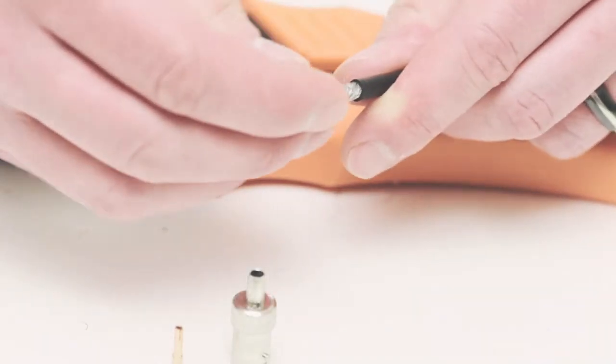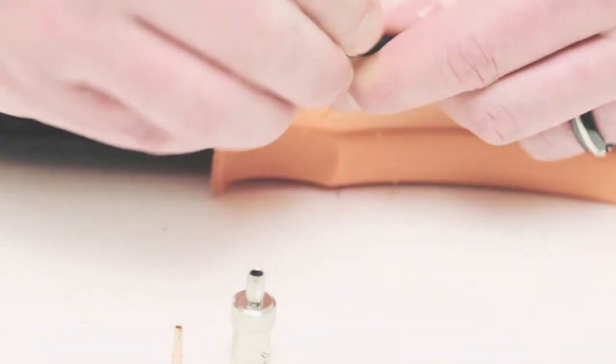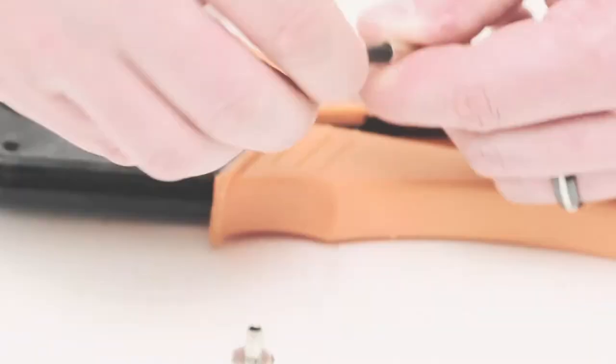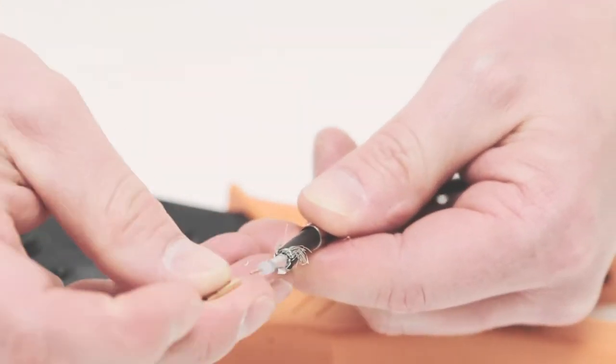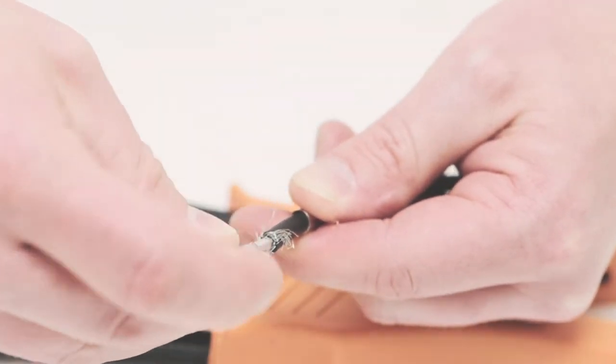Next slide your ferrule onto the cable. Peel back the braid and fold it on top of the jacket. Take your center pin and place it on the center conductor.